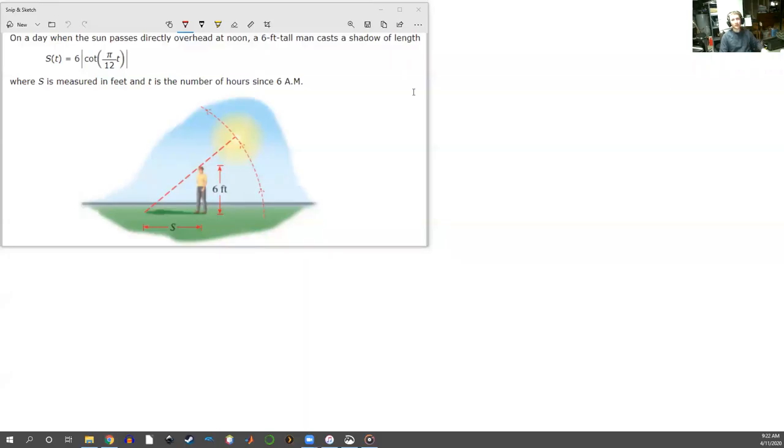It says define the length of the shadow at 8 a.m., at noon, and 5:45 p.m. Well, this problem gives us a nice little function here which tells us how to find the length of shadow. So this tells us a six-foot man casts a shadow of this length, and it tells us s is measured in feet. That's the length of his shadow in feet, and t is the number of hours since 6 a.m.